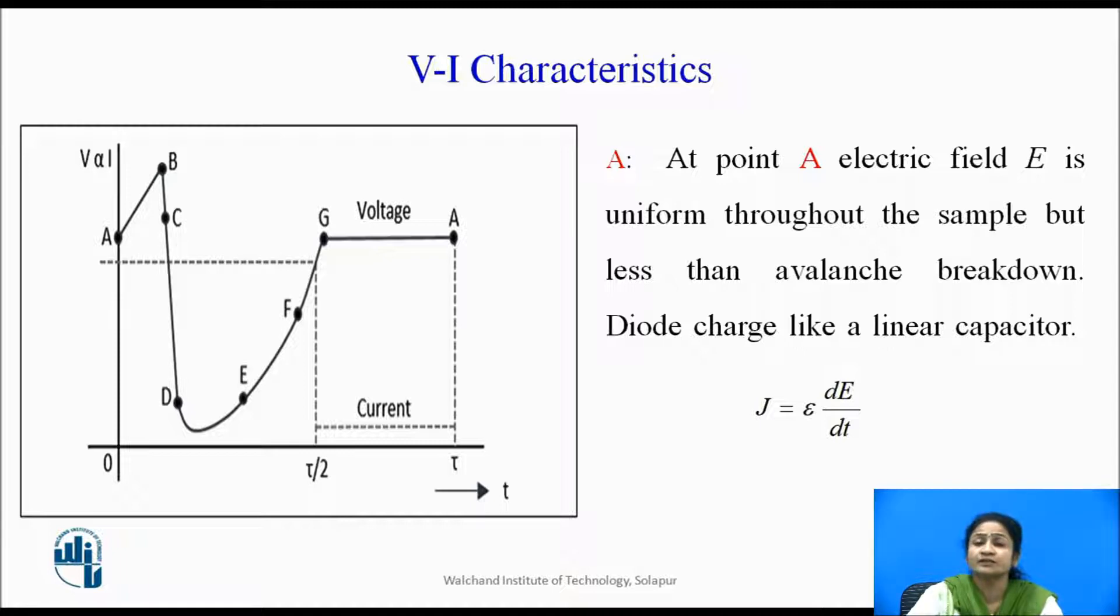At this point, the current density is represented by epsilon dE/dt, where epsilon is nothing but the permittivity of the semiconductor devices.